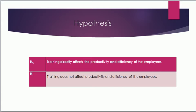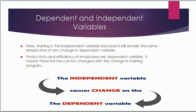The hypothesis for this project is as follows: the null hypothesis states that training directly affects productivity and efficiency of employees, while the alternative hypothesis states that training does not affect productivity and efficiency of employees. Training is the independent variable because it will remain the same irrespective of any change in the dependent variable. Productivity and efficiency of employees are the dependent variables, meaning these factors can be changed with a change in the training program. The independent variable causes change in the dependent variable.